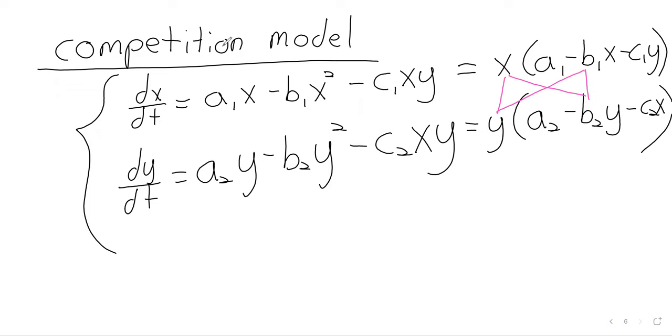So this competition model has four fixed points. Three of these fixed points involve the extinction of a species. Zero, zero, mutual extinction. Zero, A2 over B2, species X goes extinct. A1 over B1, zero, species Y goes extinct.